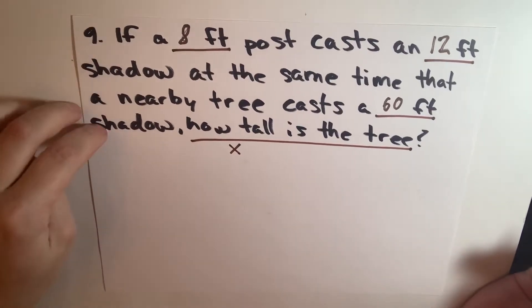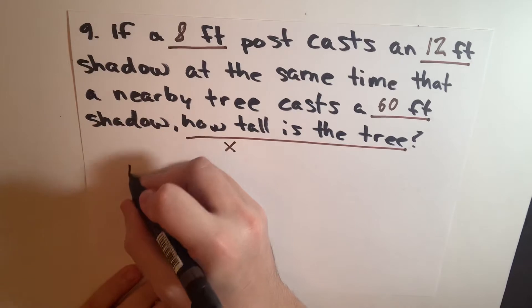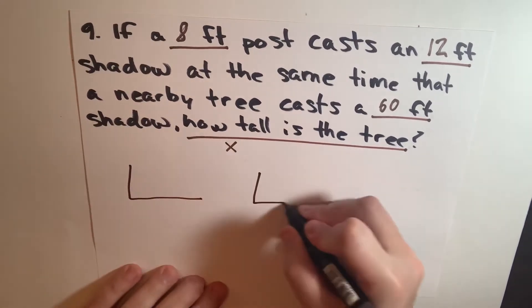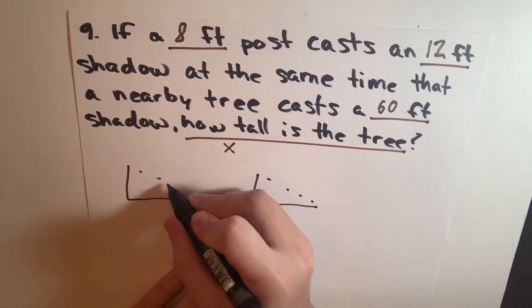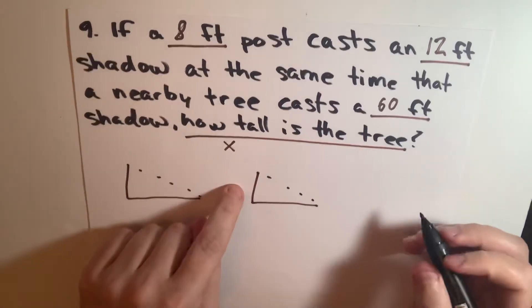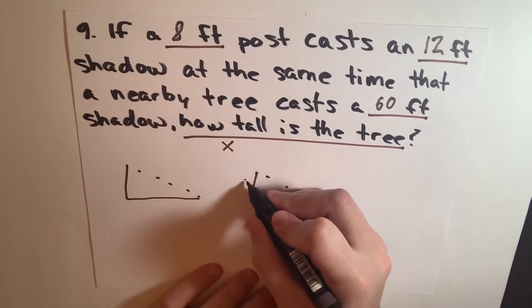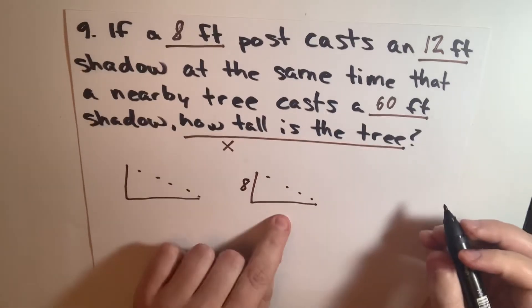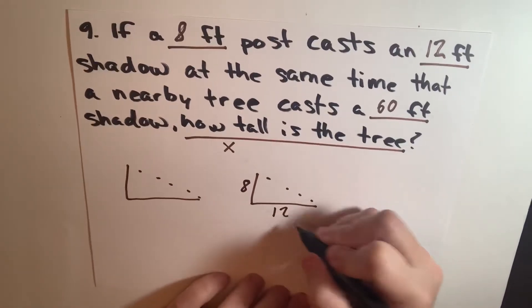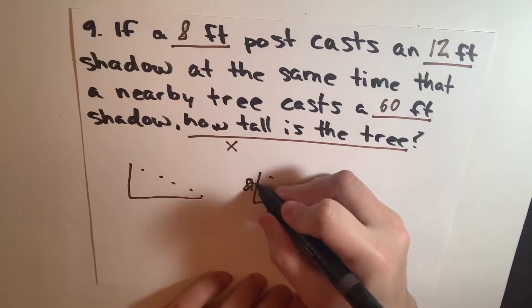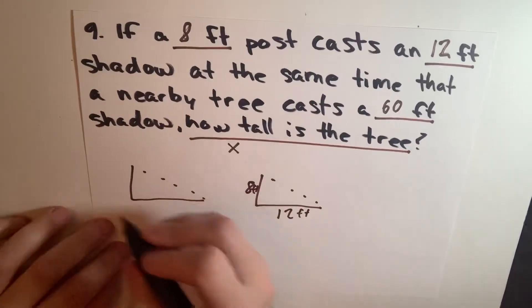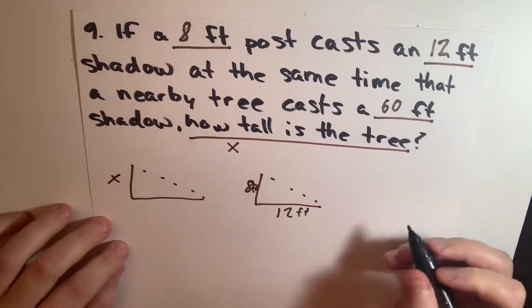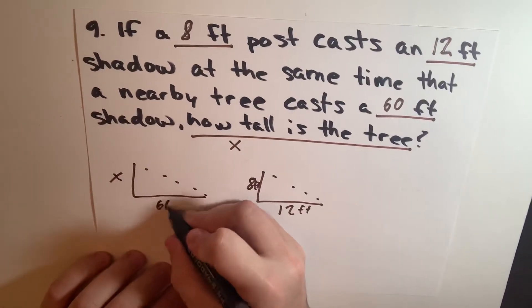So the easiest way to do this would be to make two triangles, and then these are the shadows that are being cast. So this is the height of the first post, which is 8. The shadow is 12-foot. Now we don't know the height of this one, so we're going to call this x. And we know the shadow is 60-foot.